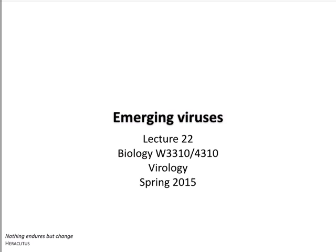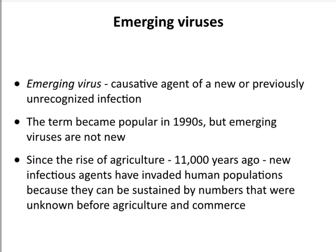We have talked a bit in this course about where viruses came from, and we've touched on the idea that any new viruses that emerge today come from previously established viruses. Today I want to focus on this idea and talk about where some virus infections come from that emerge apparently all of a sudden. This is called emerging viruses.